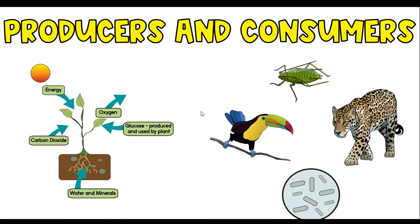Lastly, we have our decomposers. Decomposers, like the bacteria shown here, help break down dead organisms. This may seem like a gross part of an ecosystem, but it is so important because this is where all of that energy gets recycled back into the ecosystem. Those dead organisms' energy does not go to waste — the circle of life ensures that we're returning that energy back into the ecosystem, recycling the nutrients back into the food chains and the food webs.